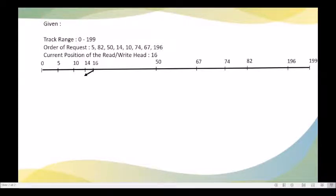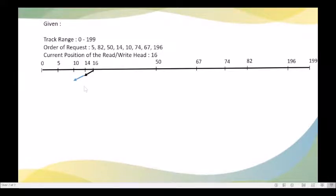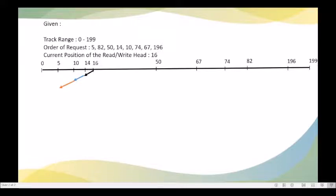From track number 14, the head can move towards track number 10 or track number 50. Since going to track number 10 results in minimal arm movement, from track number 14 it moves to track number 10, and then from track number 10 it moves towards track number 5. Then from track number 5, it will move to track number 50.